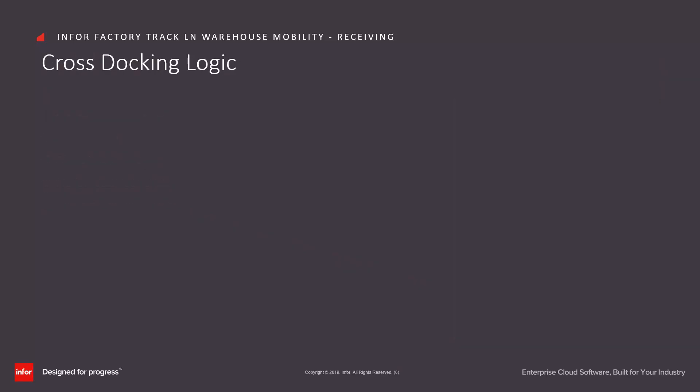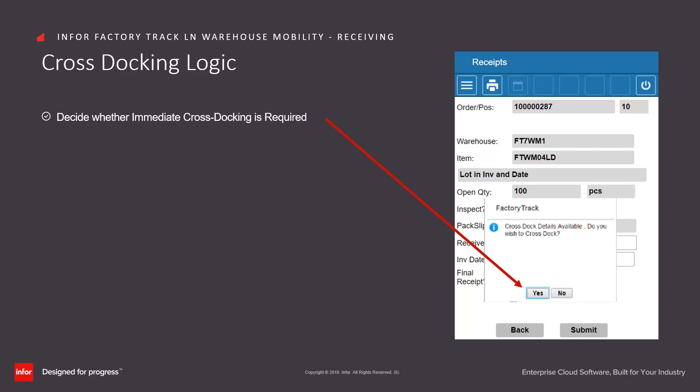Cross-stocking logic is also available. This will allow you to determine whether immediate cross-stocking should be performed. In this case, it would receive the goods into a cross-stock location and automatically outbound them against an existing outbound requirement.